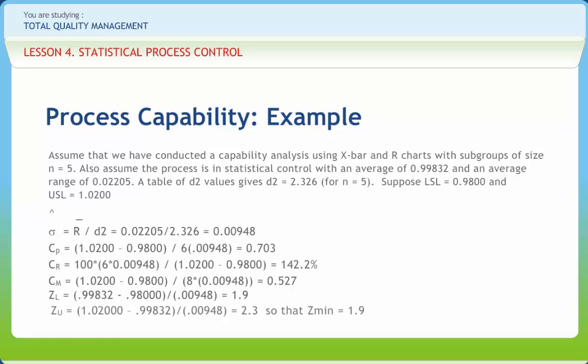Cpk equals 0.63. Since this is only slightly less than the value of Cp, the indication is that there is little to be gained by centering and that the need is to reduce process variation.